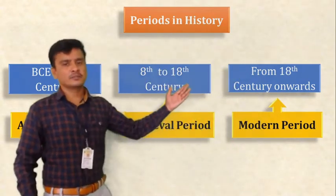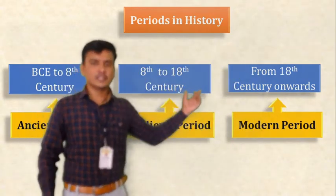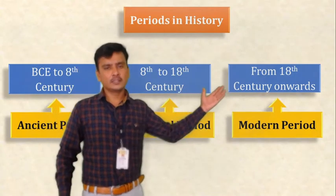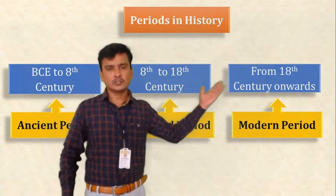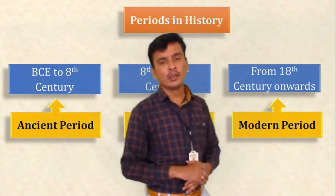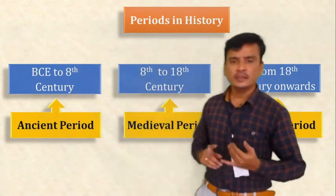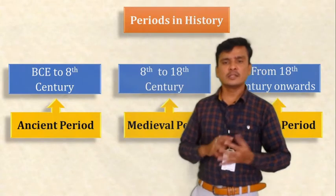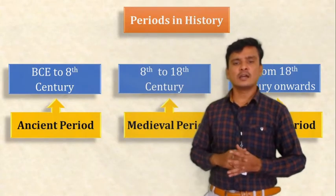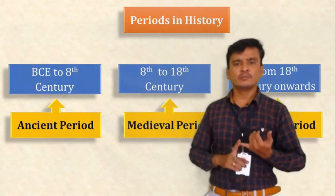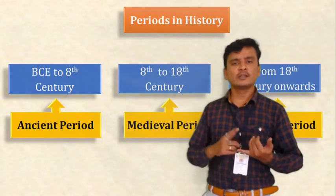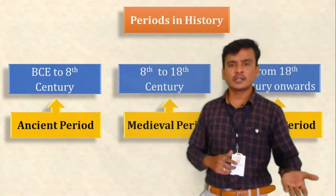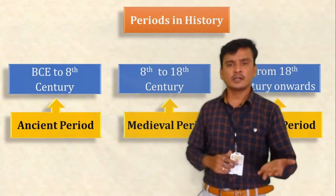The medieval period starts from the 8th century and ends with the 18th century. In that period — as we learned in 7th class — there was the Mughal period, the Sultanate period, the Vijayanagara empire, and the Maratha empire, all of which come under the medieval period.